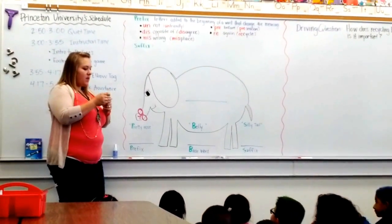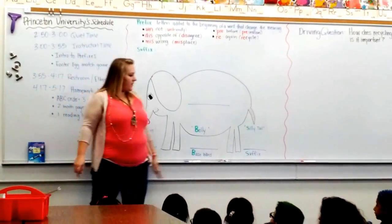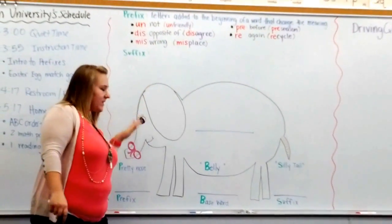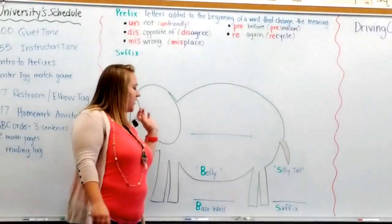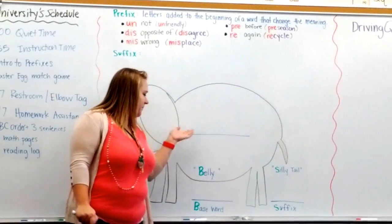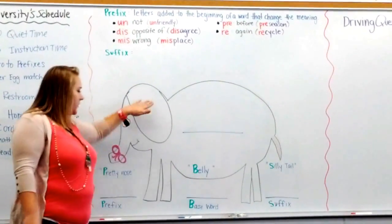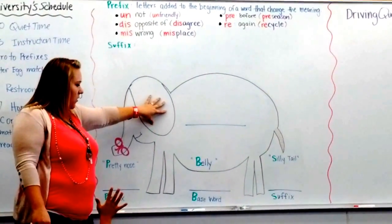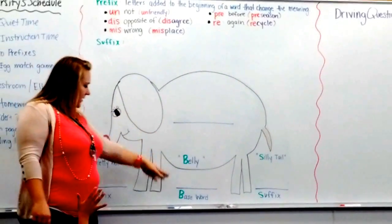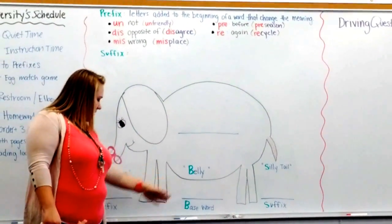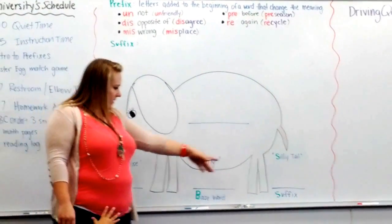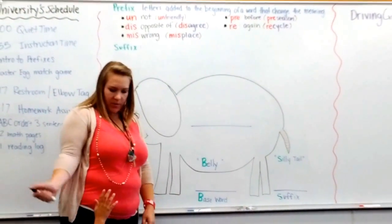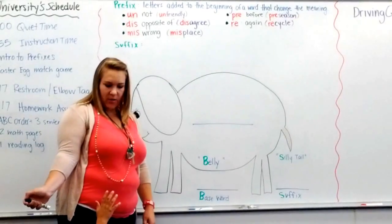So let's talk about it today. What animal do I have here? You guys were all asking about my elephant yesterday, and we're going to learn about the elephant today. The reason I drew an elephant is because the elephant is going to help us know where our base word goes, where our prefix goes, and where our suffix goes. But before we can find out where they go, we have to find out what they are.